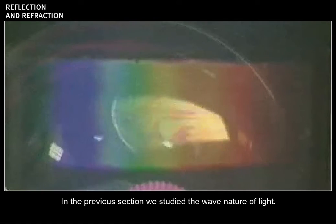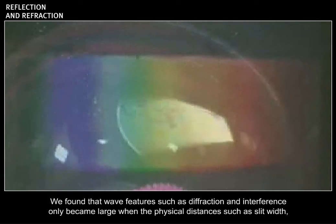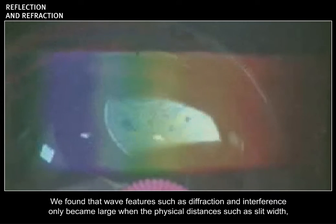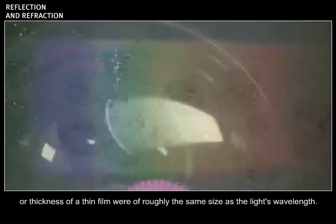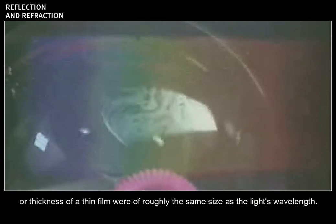In the previous section, we studied the wave nature of light. We found that wave features such as diffraction and interference only became large when the physical distance, such as slit width or thickness of a thin film, were of roughly the same size as light's wavelength.